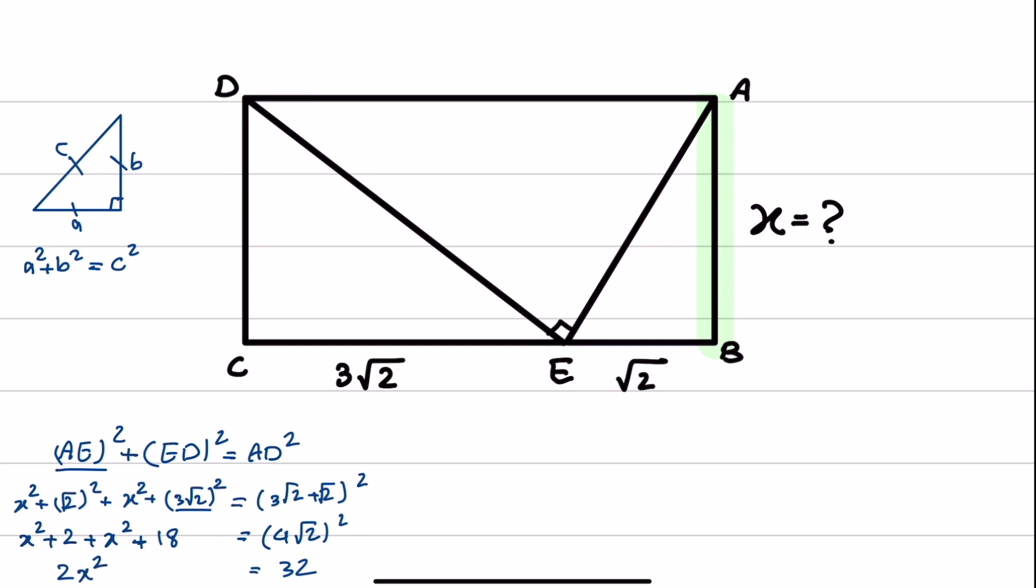If I further simplify the expression, I will get 2 times X squared is equal to 12. And if I divide both sides by 2, I will get X squared is equal to 6. And from this, I can get X as plus minus square root of 6.